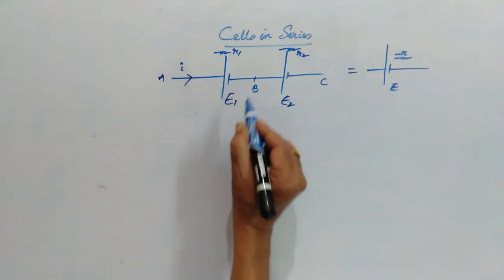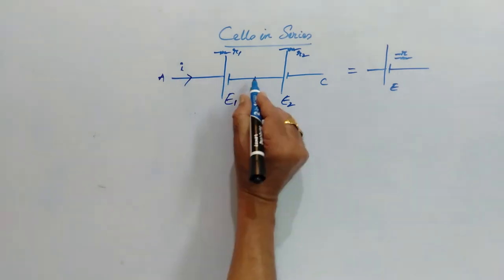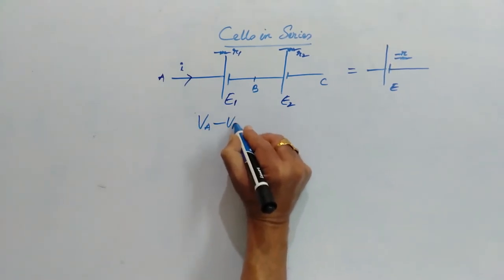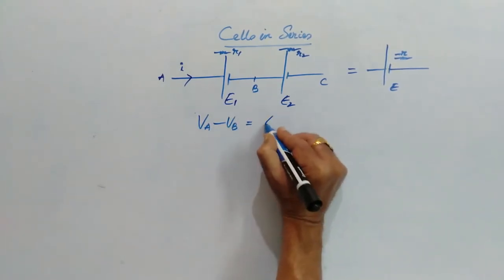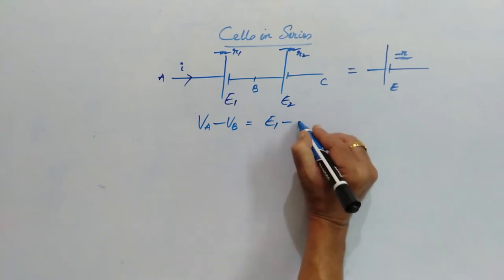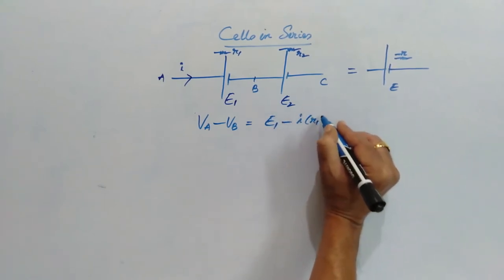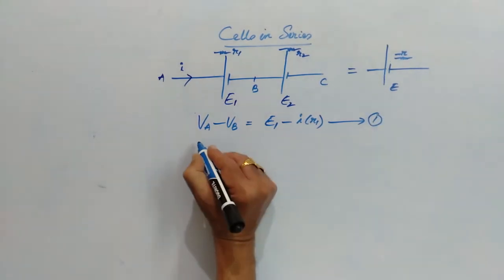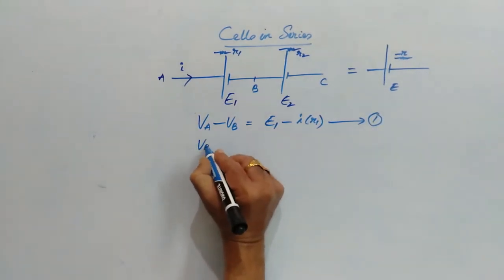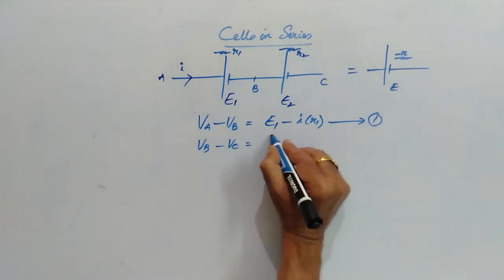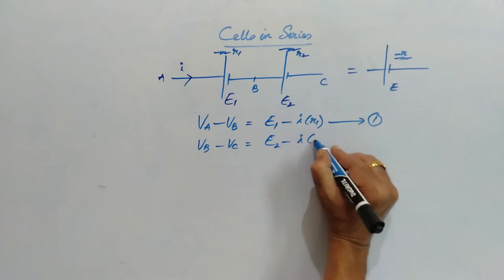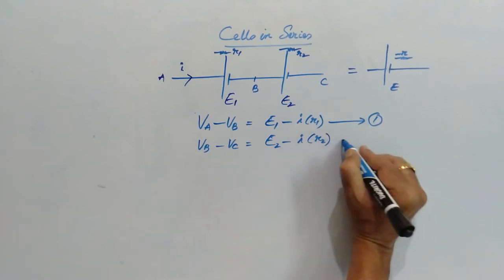then for AB, I can write VA minus VB is equal to E1 minus I times R1. This is the first equation. Similarly, VB minus VC is equal to E2 minus I times R2.